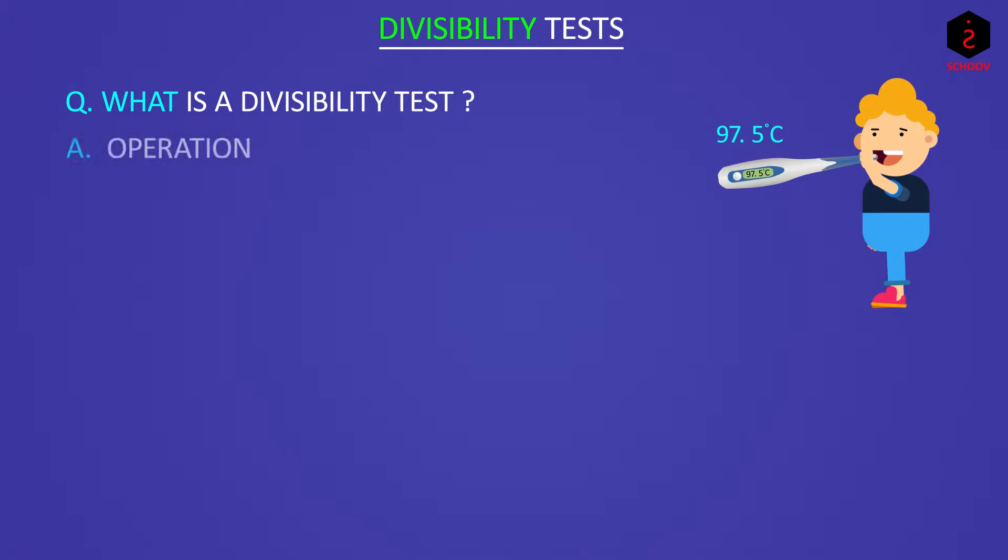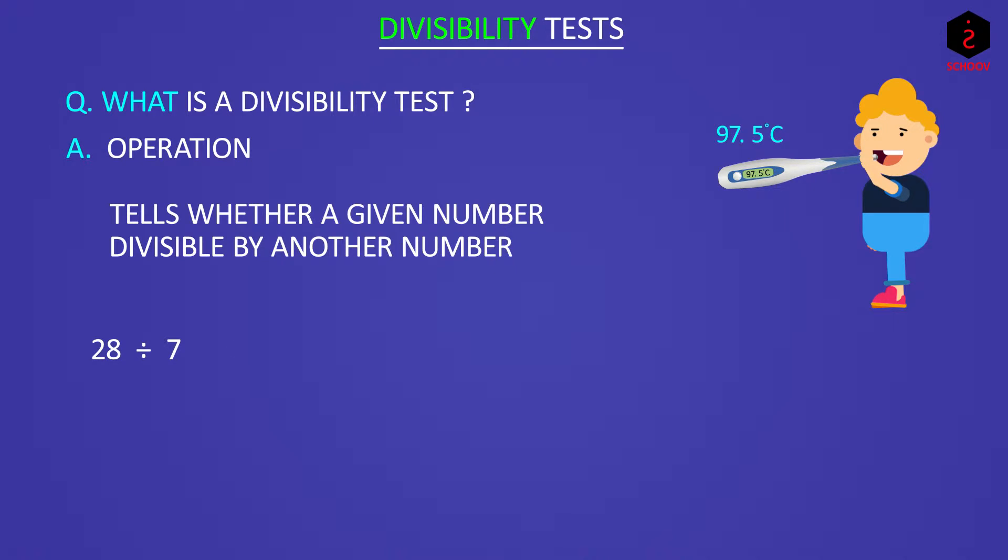Divisibility test is an operation that we perform to find out whether a given number is divisible by another number or not. For example, 28 is divisible by 7 and the quotient is 4. But when we divide 28 by 8, we get a remainder 4.